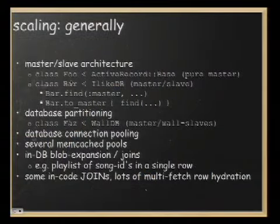If I did a write, a subsequent read is guaranteed to come from the master and will have whatever I just wrote. By contrast, with a master-slave connection — in Ruby, class Bar inheriting from ILikeDB — sometimes if I write something to this model and then read it later, I might not actually get what I wrote. That's because of replication lag: a time delay between when data is written to the master and what is read from the slave.